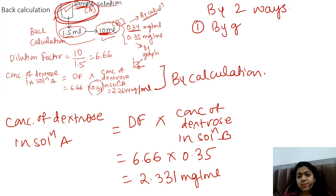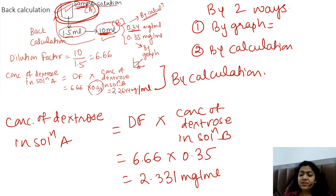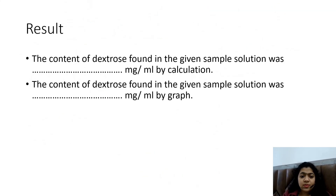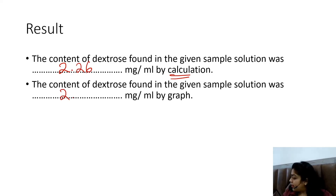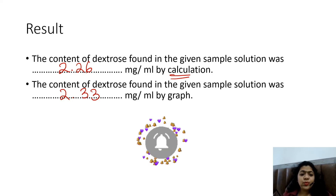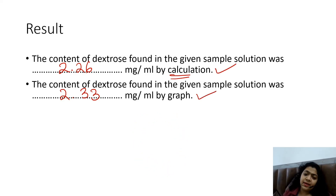So I have got the final answer — the concentration of the sample solution by two methods: by graph and by calculation. How to write the result statement, since in the final exam marks are kept for it: the content of dextrose was found to be in the given sample solution — 2.26 mg per ml by calculation and 2.33 mg per ml by graph. This was the linear regression analysis.